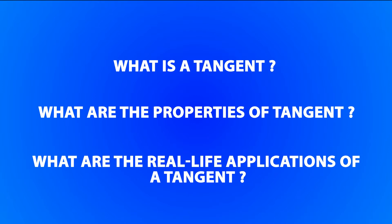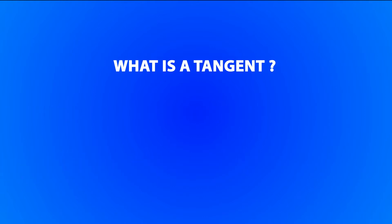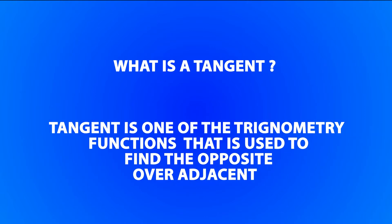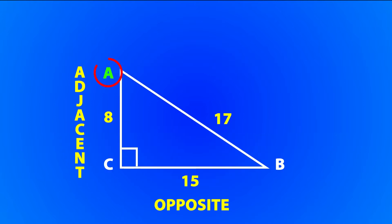We will start with answering the first question. Tangent is one of the trigonometric functions that is used to find the opposite over adjacent. As you can see in this diagram, tangent for angle A is ratio of opposite to adjacent side that is 15 divided by 8. Here, 15 by 8 is the length of tangent.